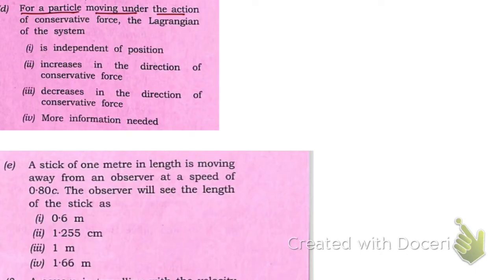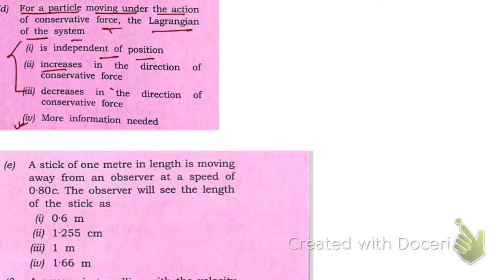For question D: for a particle moving under the action of a conservative force, the Lagrangian of the system — is it independent of position, increases in the direction of the conservative force, or decreases? These options are not a proper complete explanation; we need more information here to give a definitive answer.